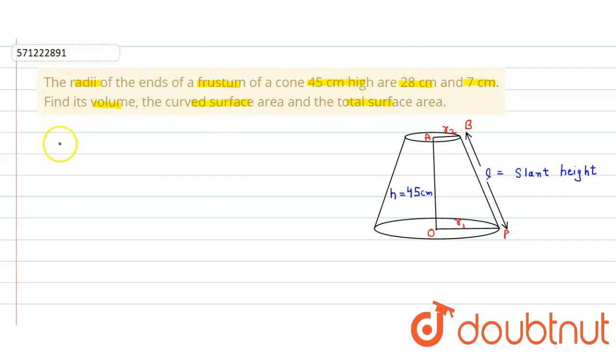So here first we consider r₁ is equal to 28 cm and r₂ is equal to 7 cm, and h is equal to height, h is equal to 45 cm. Here this height is equal to 45 cm.